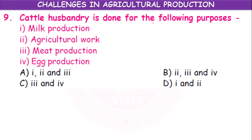Cattle husbandry is done for the following purposes: milk production, agricultural work, meat production, and egg production. Milk production is correct; agricultural work is correct as bulls are used; meat production is also available from cattle. Egg production is wrong — that is from poultry. So options 1, 2, and 3 are correct — answer is option A.